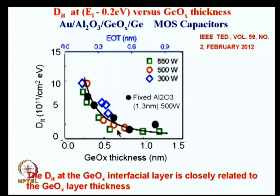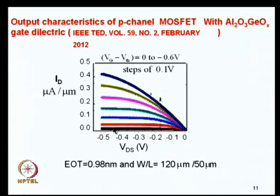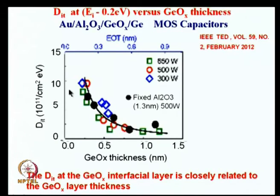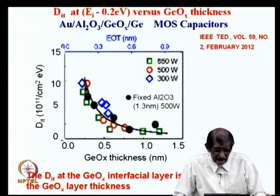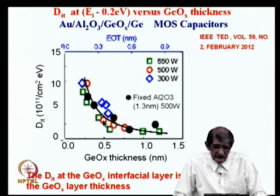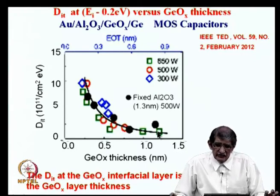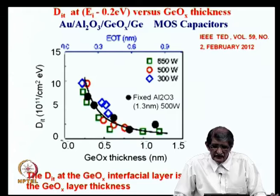There is a direct correspondence between germanium oxide thickness and DIT — germanium oxide thickness controls the interface state density significantly. Without germanium oxide or with very thin GeO2, DIT is high. As GeO2 increases toward ~1 nm, DIT becomes very small. About 1 nm of germanium oxide is found to be optimum.